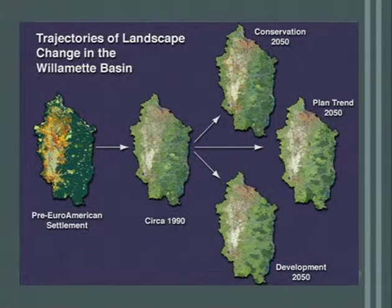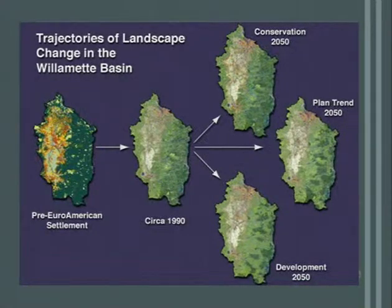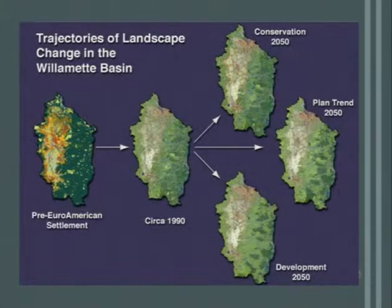This understanding of the trajectory of change is used to define a set of assumptions about how the future will unfold. There are three different paths to the future illustrated: one with an emphasis on ecological function, called the Conservation 2050 scenario; a second, the Planned Trend 2050 scenario, where policies and practices from the present continue largely unchanged into the future; and a third alternative that assumes more emphasis will be put on short-term economic gain, called the Development 2050 scenario.